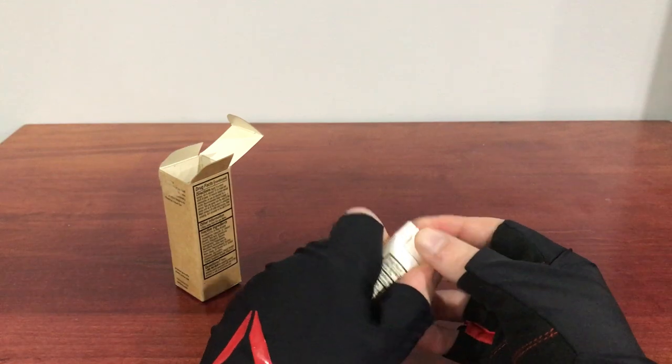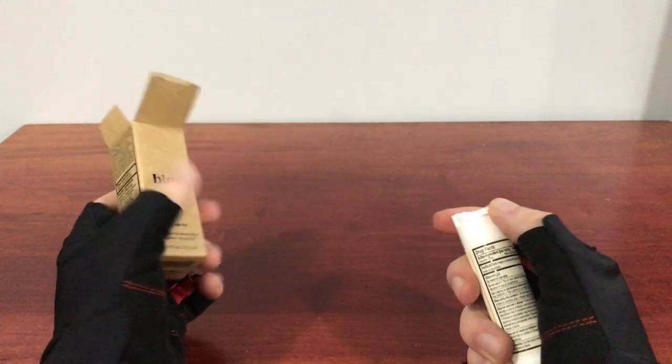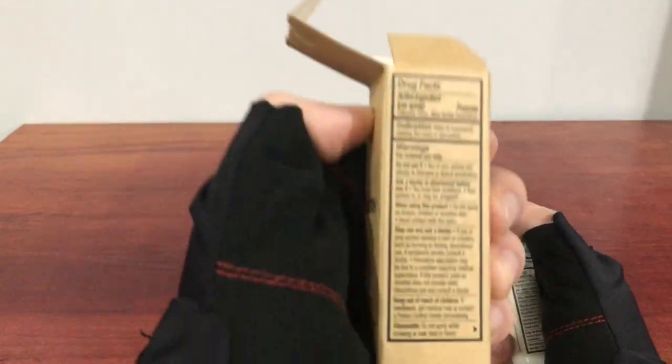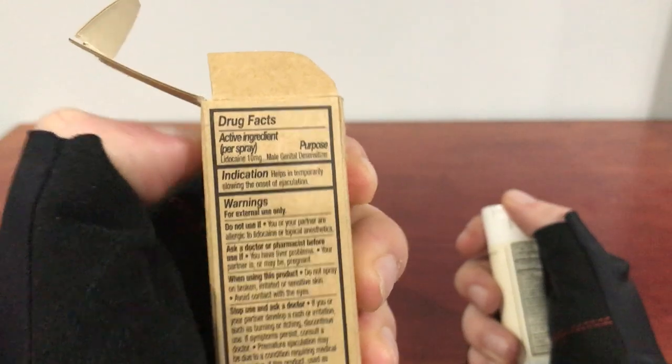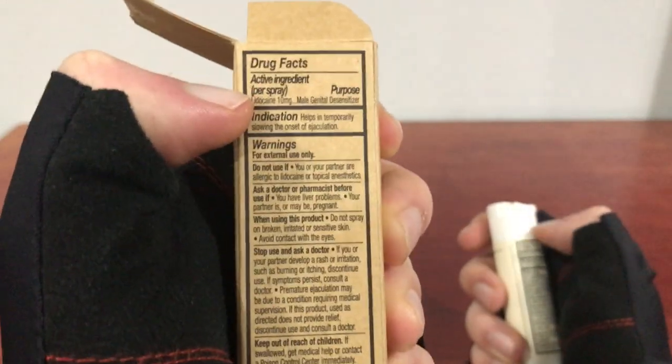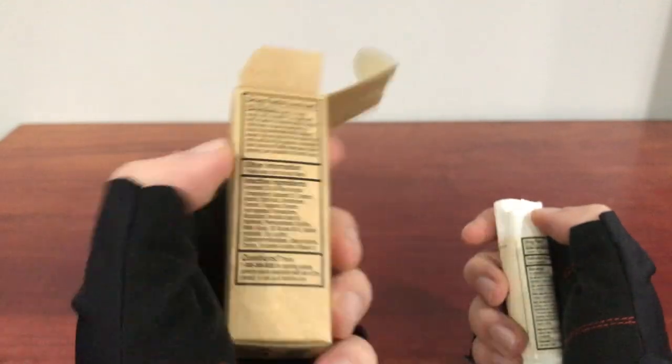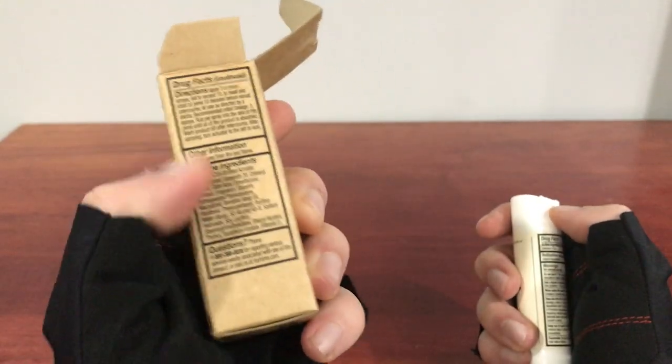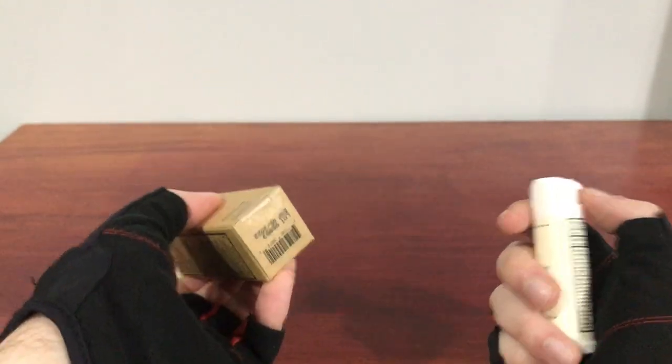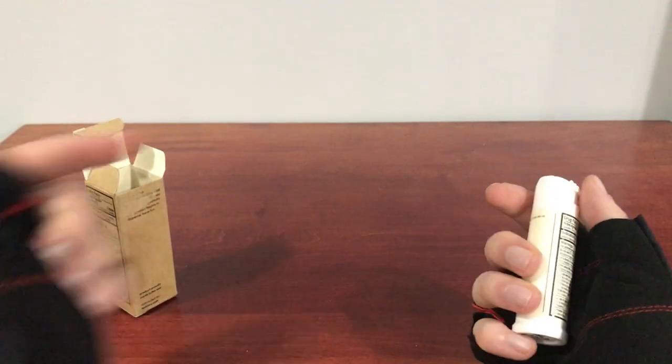I've used a couple other sprays similar to it like Promescent and it does work on a similar concept. If you notice on the back the active ingredient is lidocaine spray 10 milligrams per use, whereas there are some inactive ingredients that essentially are just all the chemical names for the goop that the lidocaine is within. It's quite simple.